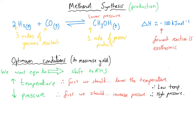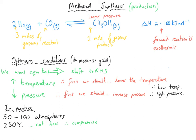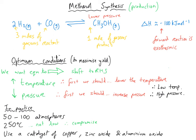In practice, we use 50–100 atmospheres pressure for a good yield and fast rate. We use a temperature of 250°C — not low, but not high from an industrial perspective. We want to maximise yield with a low temperature, but we can't compromise too much on rate, since a higher temperature gives a faster rate. To compensate, we include a catalyst — a mixture of copper, zinc oxide, and aluminium — which helps us overcome that compromise.